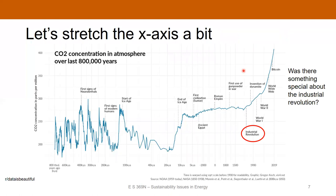We can expand the x-axis starting at the end of the last ice age, roughly about 18,000 years ago. This shows those periodic ups and downs. A couple of things are noted on here: first evidence of Neanderthals and modern humans, the start of the last ice age, the last glacial maximum, and then the CO2 level going up again since then. You can see ancient Egypt, the Roman Empire, first use of gunpowder marked on this timeline.